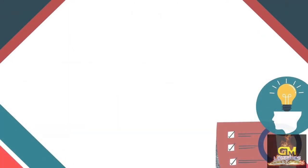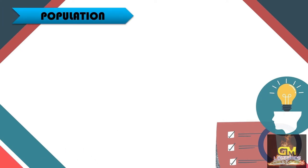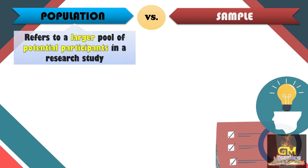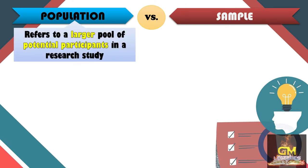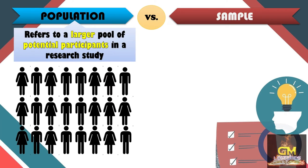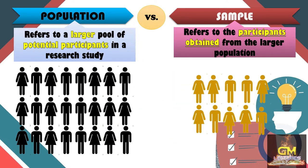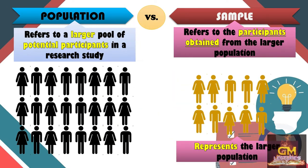But before anything else, let's have a short recap regarding the difference between population and sample. When we say population, this refers to a larger pool of potential participants in a research study — pretty much the group of people who have the possibility to become part of the research itself. Whereas sample refers to the participants which are obtained from the larger population, and the sample is considered as a representative of that larger population.